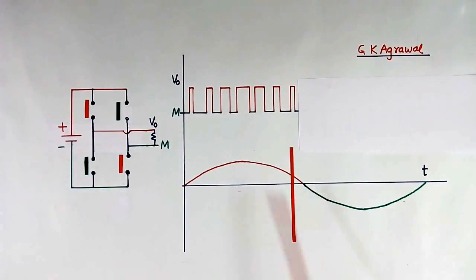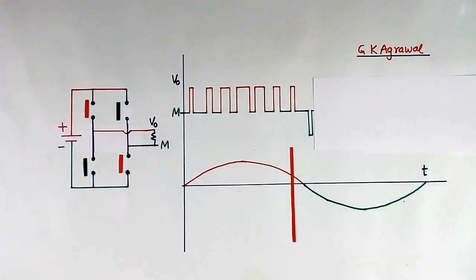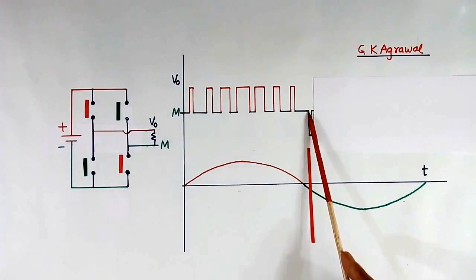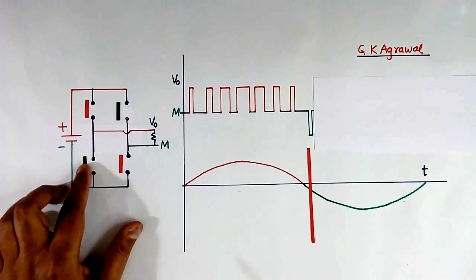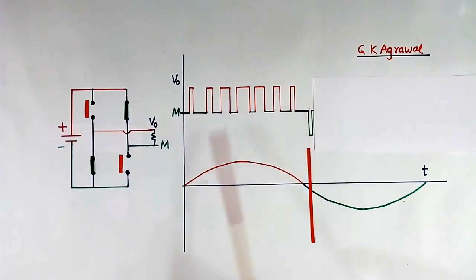Now to generate this, we will use these switches. These two will remain open. So at this point, we will switch these two switches ON. Now what happens, we are assuming M as 0, so this point voltage will be negative.